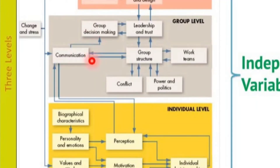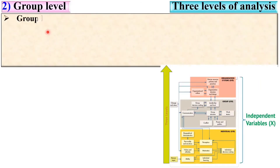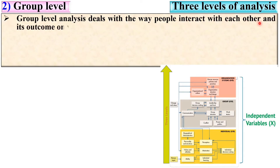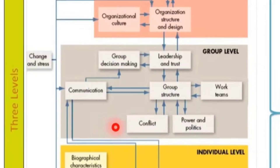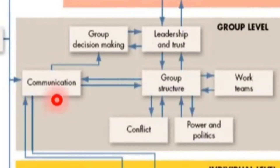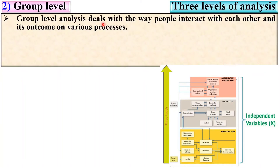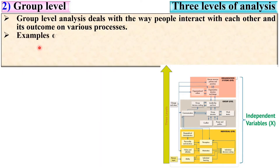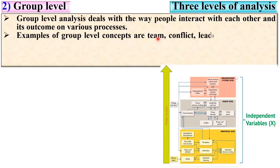The second one is the group level. Group level analysis deals with the way people interact with each other and its outcome on various processes such as communication, group decision making, conflict, and power and politics. Examples of group level concepts are team, conflict, leadership, and power and politics. These are the parameters where group level analysis is very important.